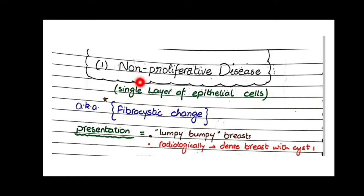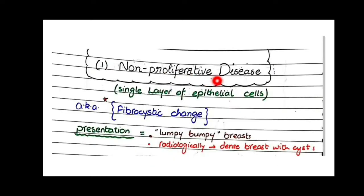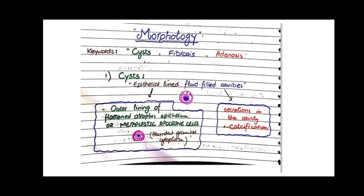Non-proliferative disease of the breast clinically presents as lumpy bumpy breast, or radiologically as a dense breast with cysts. For the morphology of this non-proliferative disease, remember three keywords: cysts, fibrosis, and adenosis. These three are the constituents of non-proliferative disease of the breast.